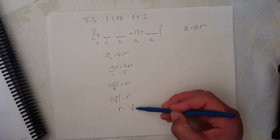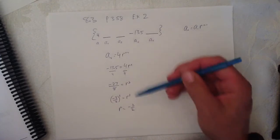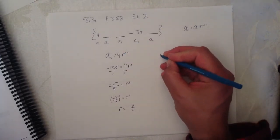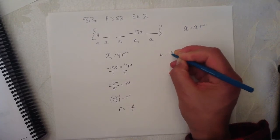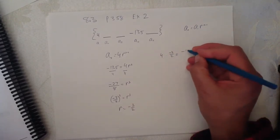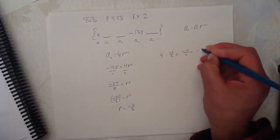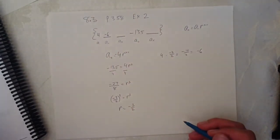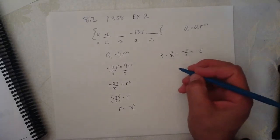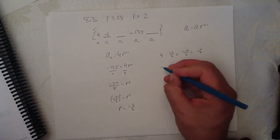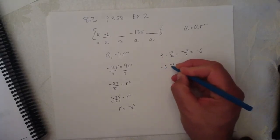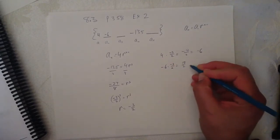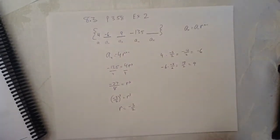And if R equals negative 3 over 2, I will multiply the 4 times negative 3 over 2, 4 times negative 3 over 2 equals negative 12 over 2 equals negative 6.